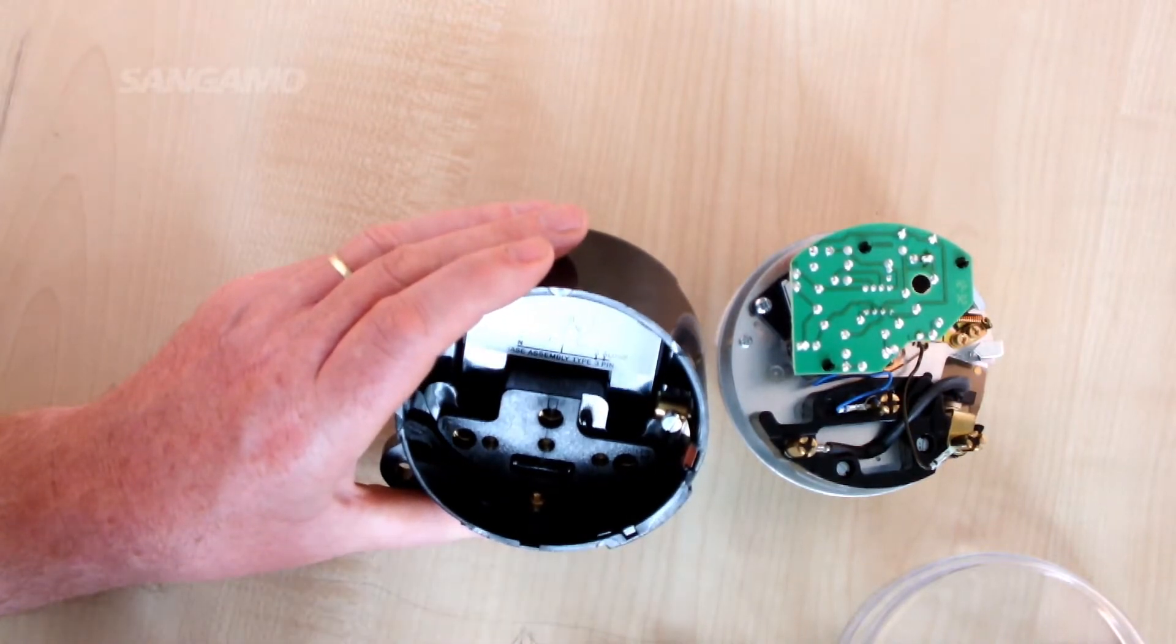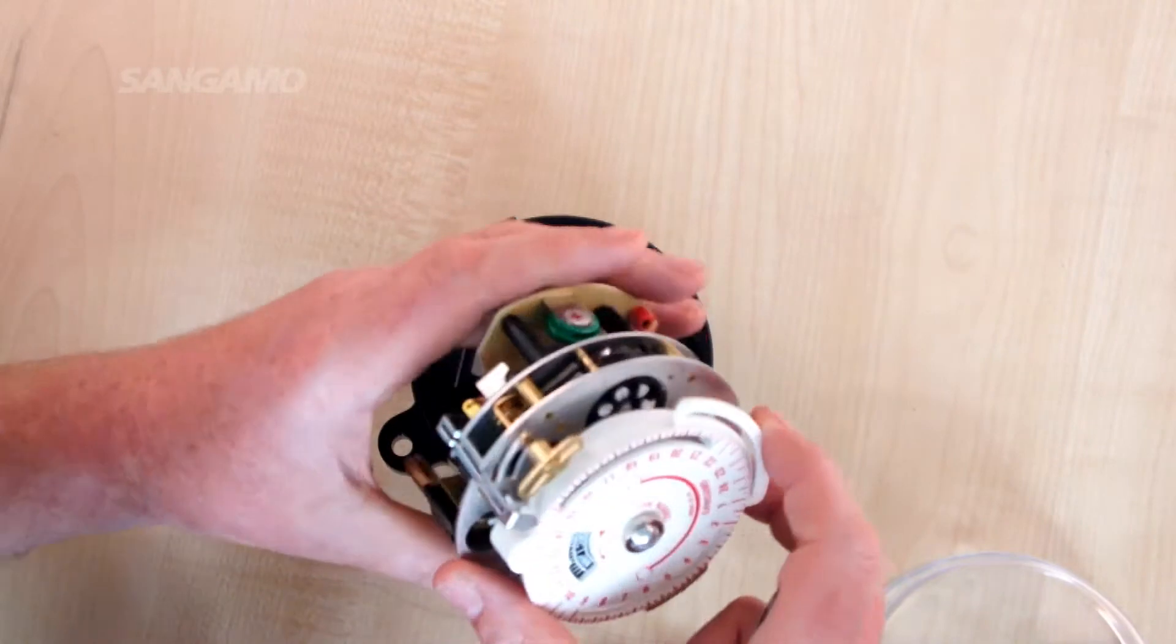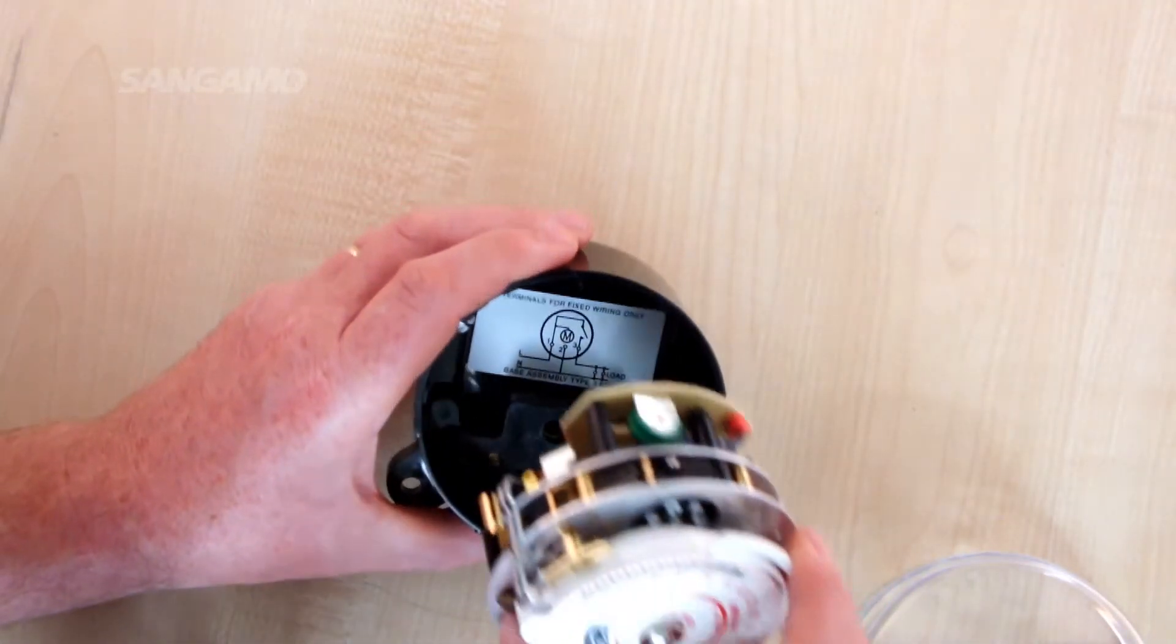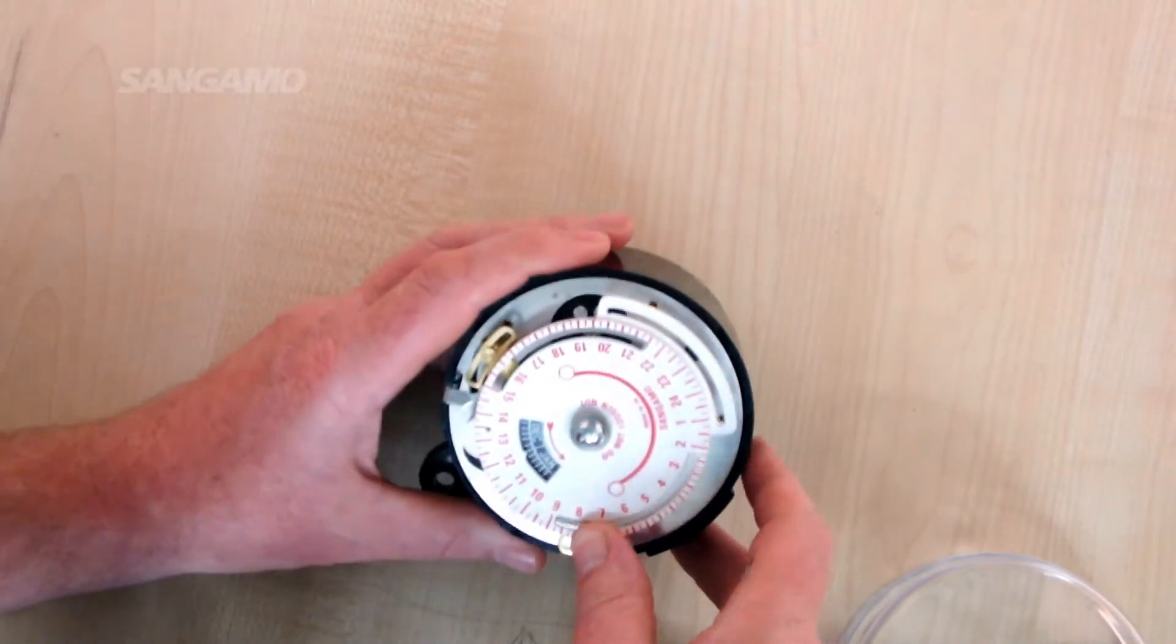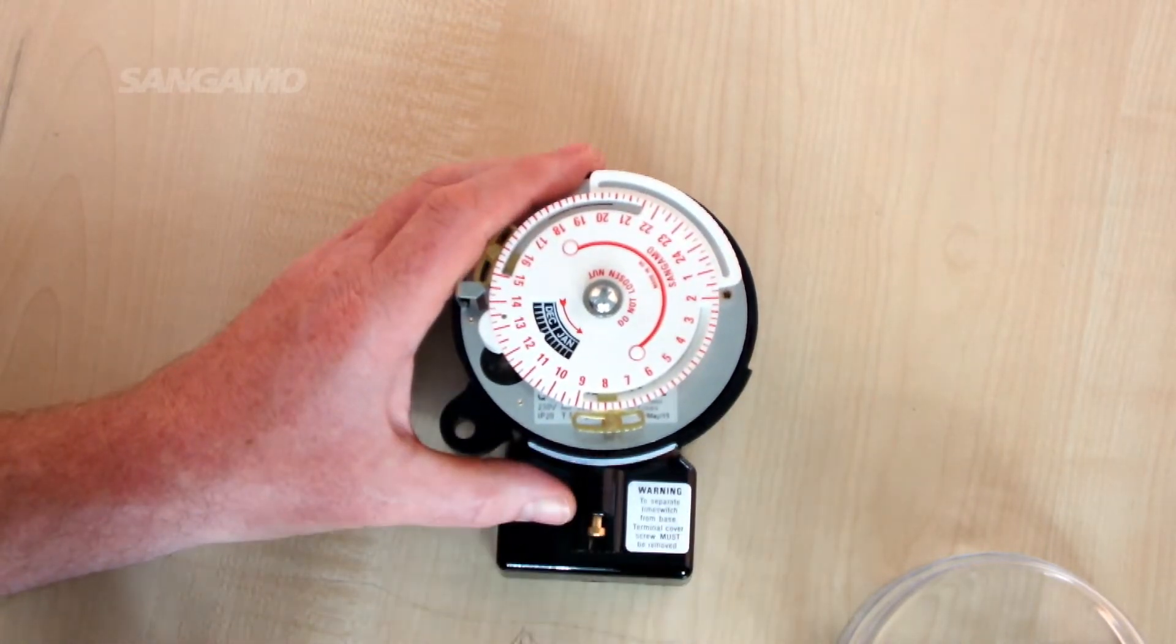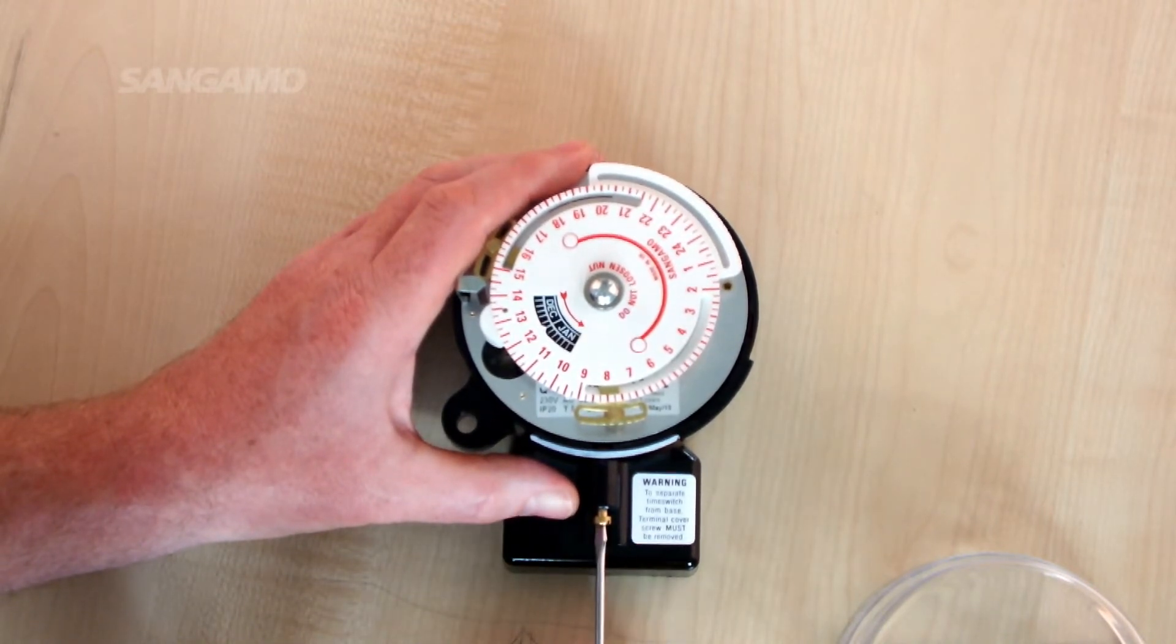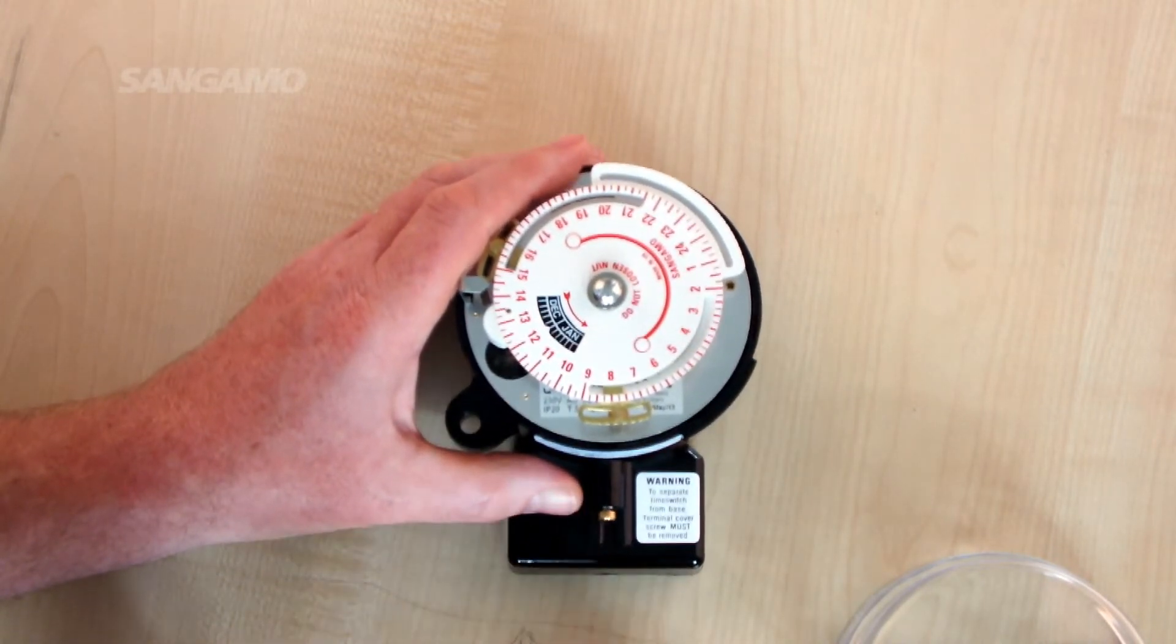Once the wiring is complete and the switch mechanism has been set up in line with customer requirements, refit the mechanism into the base. Again, it is only a push-in arrangement. Refit the extended thermal cover. There are breakouts also in the extended thermal cover that allow you to route wires in from the surface if required.